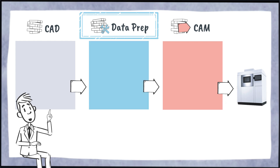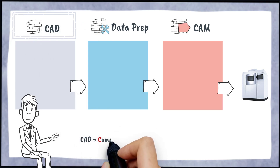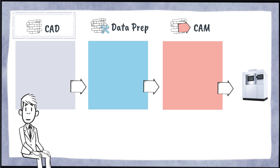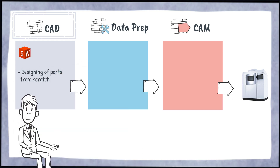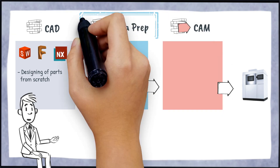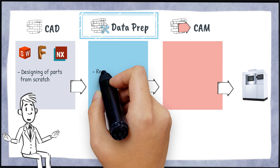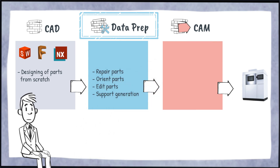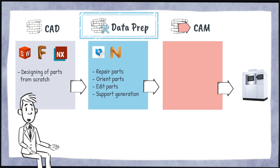CAD means computer-aided design. In the CAD software the future part is created. Examples for CAD software are SolidWorks, Fusion 360, and Siemens NX. Data preparation includes steps like repairing, orienting, and editing parts and generating the support for metal parts. At EOS we use Materialise Magics, Netfabb by Fusion 360, and AM Studio for this.